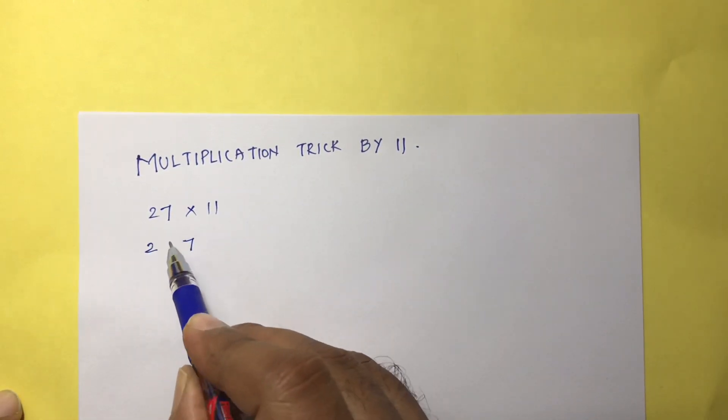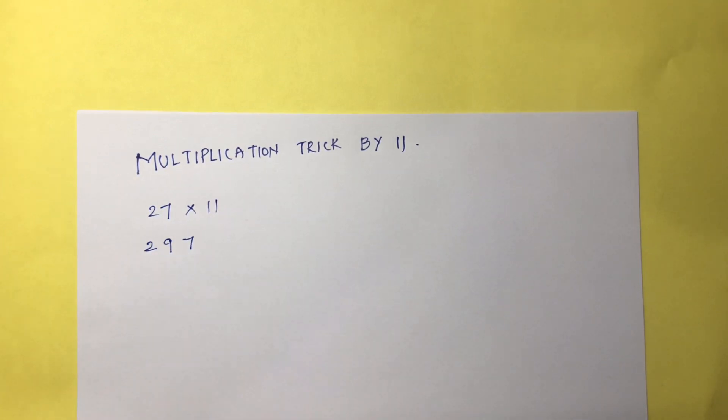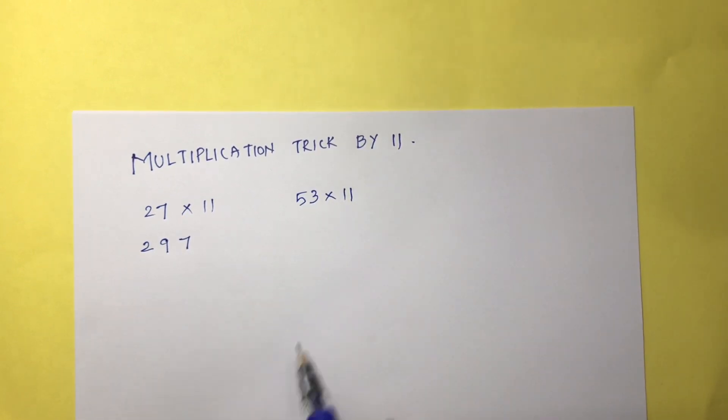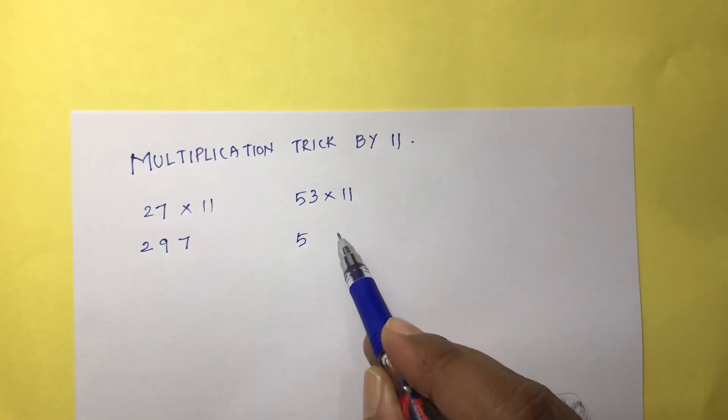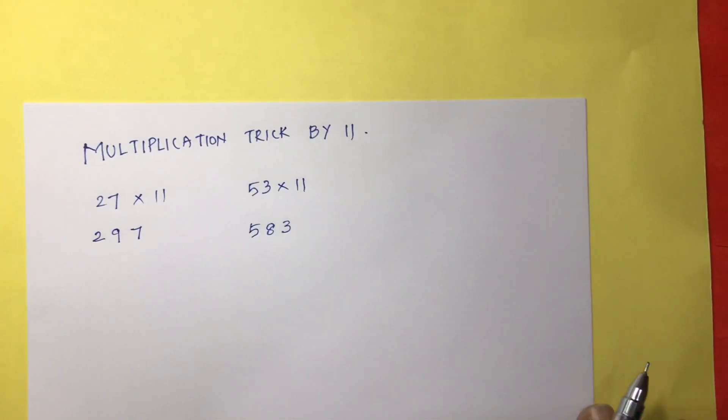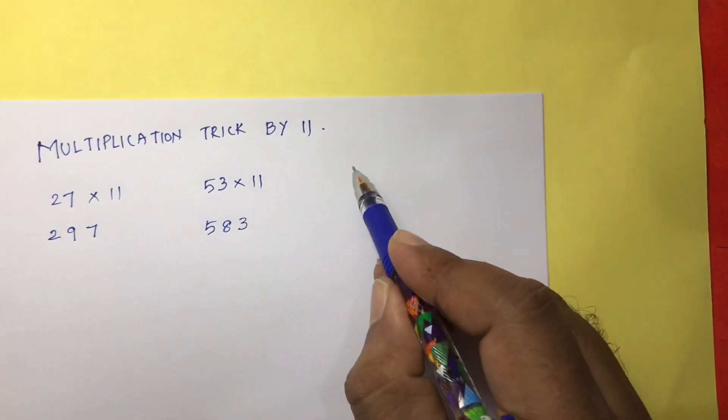2 plus 7 is 9. This is the answer. 27 into 11 is 297. If you take one more example, 53 into 11, write here 5, 3. 5 plus 3 is 8. 583 is the answer.